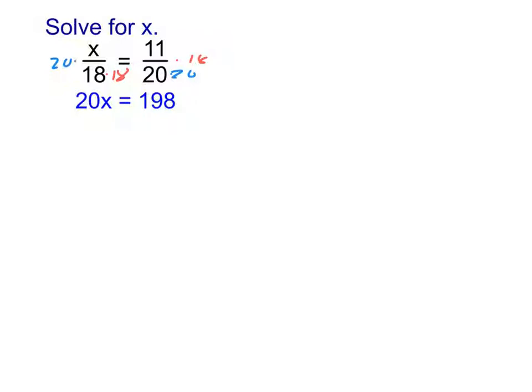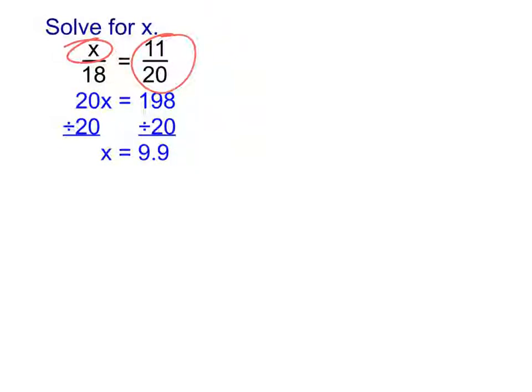Once we have 20x equals 198, we need to solve it for x, which means dividing by 20. Is that going to give us a nice pretty whole number? No. Does that mean we did something wrong? No — that can totally happen. When we divide by 20, we get 9.9, and yes, that is our final answer. What that solution really means is that if I did 9.9 divided by 18, I would get the exact same decimal as if I did 11 divided by 20.